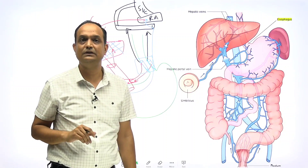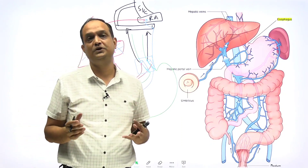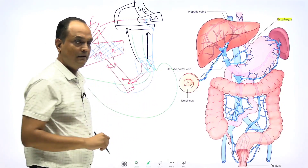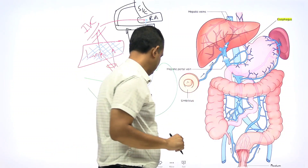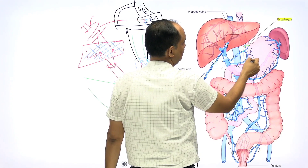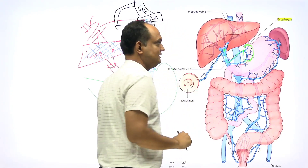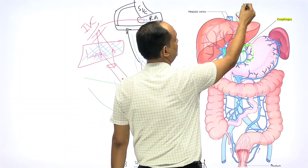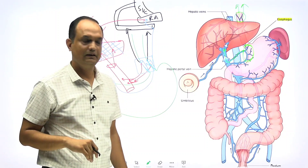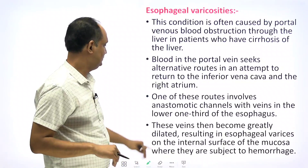In this condition, the veins present in the lower one-third of the esophagus show abnormal dilatation, which is known as esophageal varices. These veins are prone to rupture, and once they rupture, heavy bleeding occurs. In this image you can appreciate that these veins drain into the portal system and these veins drain into the azygous system to approach the superior vena cava.